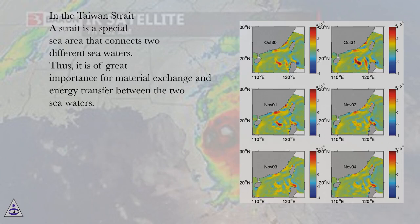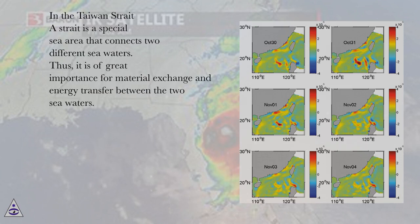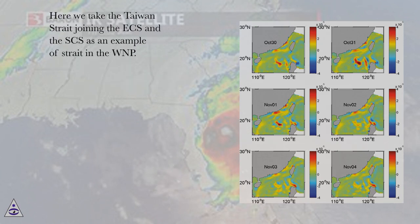In the Taiwan Strait. A strait is a special sea area that connects two different seawaters. Thus, it is of great importance for material exchange and energy transfer between the two seawaters. Here we take the Taiwan Strait joining the East China Sea (ECS) and the South China Sea (SCS) as an example of a strait in the Western North Pacific (WNP).